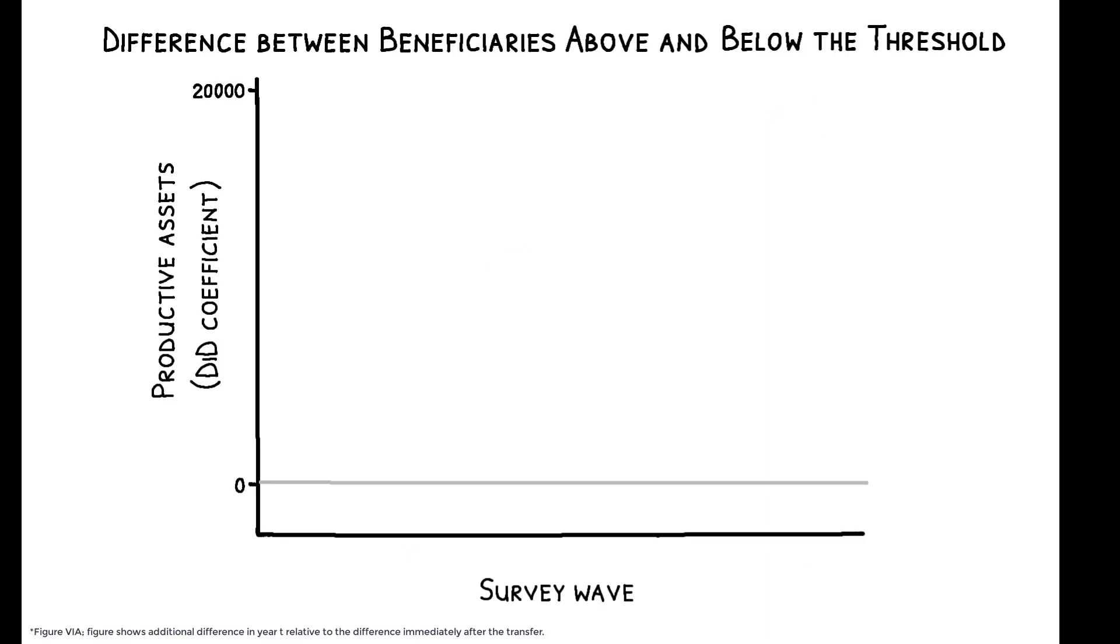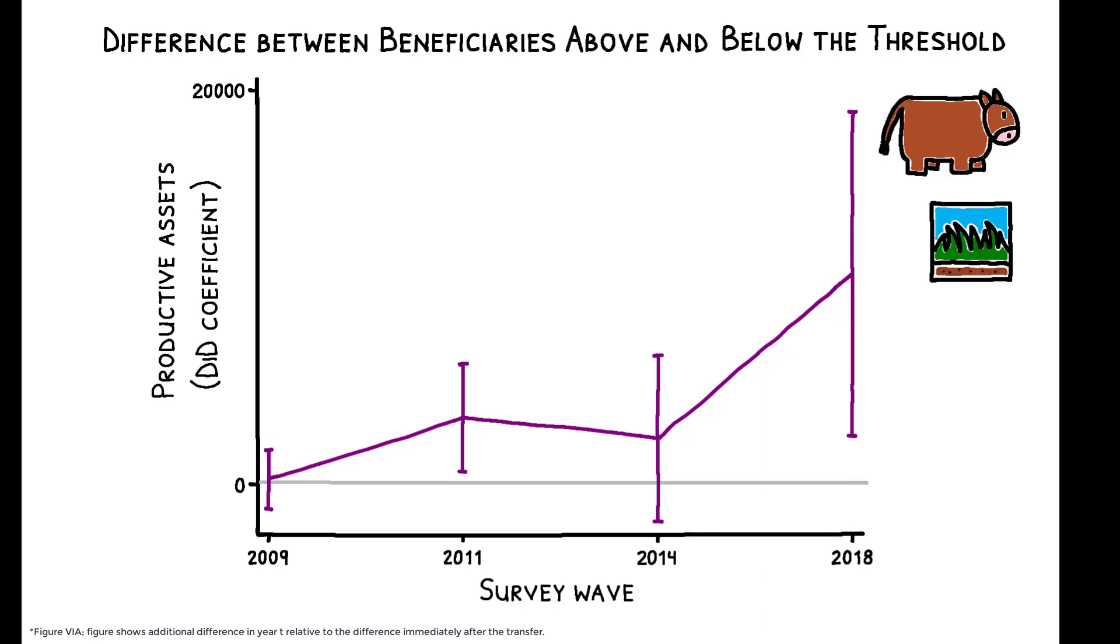This divergence continues to widen over the course of 11 years, as those above the threshold acquire additional livestock and, remarkably, land. Over time, a greater share of their earnings derives from livestock and land cultivation, occupations they were previously excluded from.